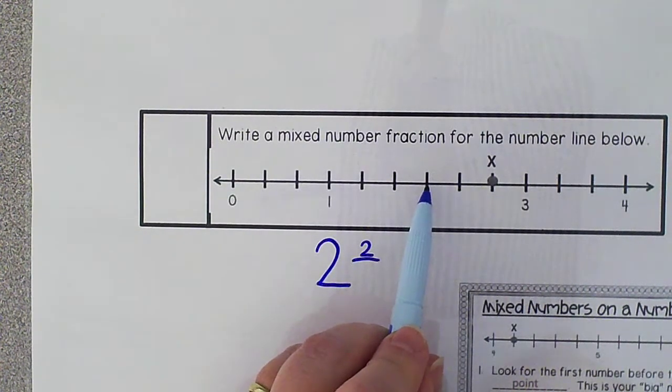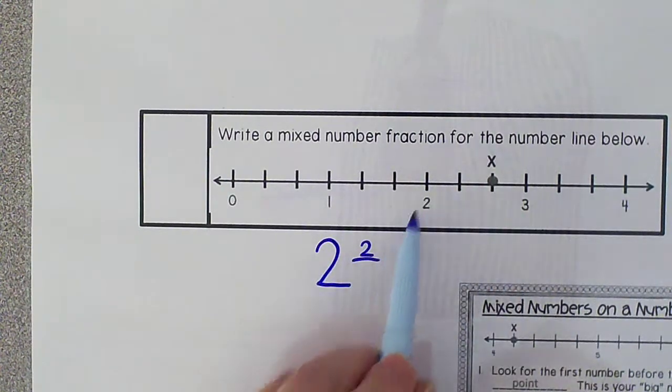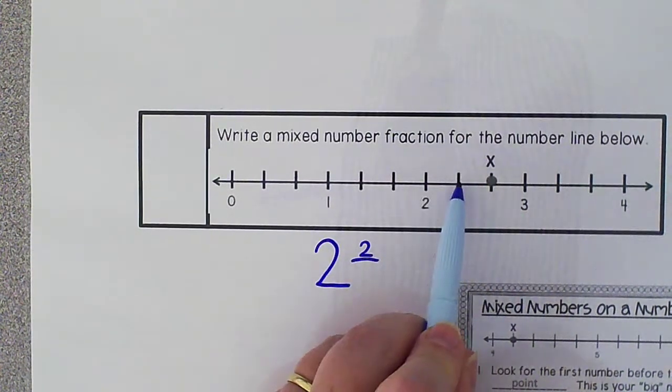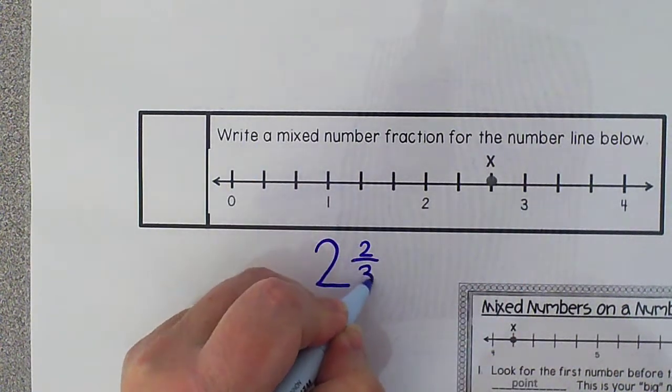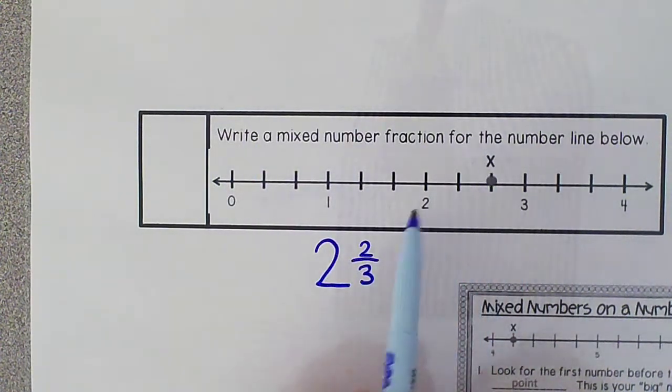For my denominator, I will count how many lines until I land on the next number. So 1, 2, 3. My mixed number for point X is 2 and 2 thirds.